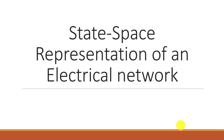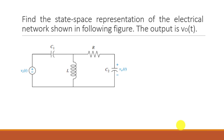We'll start with the problem. We have to find the state space representation of the electrical network shown in this figure. We are considering V_out(t), which is basically the voltage appearing at capacitor C2 at the output.